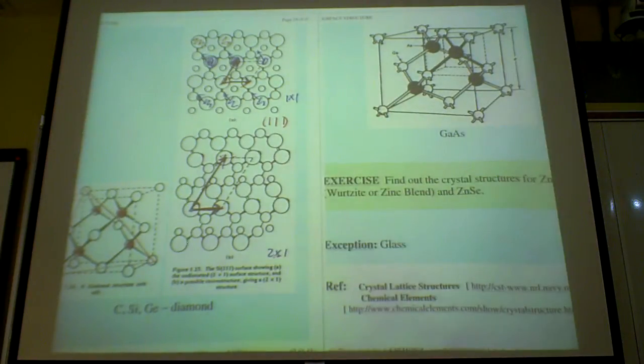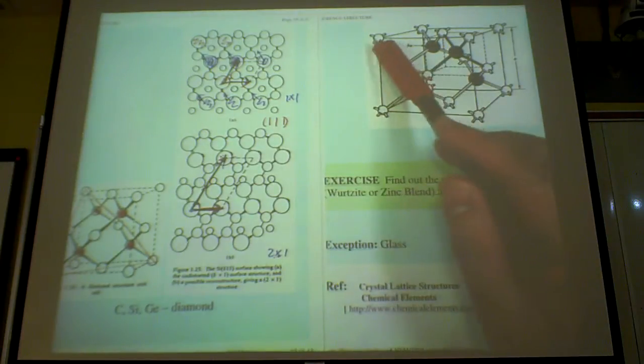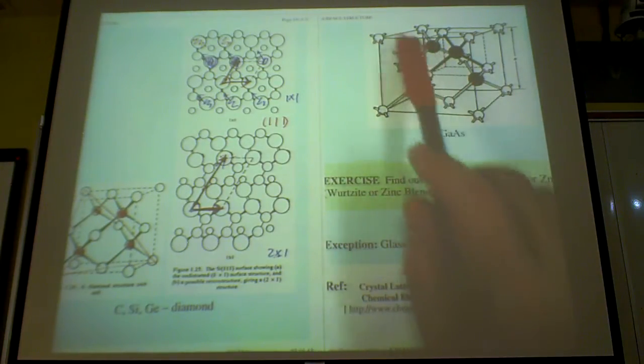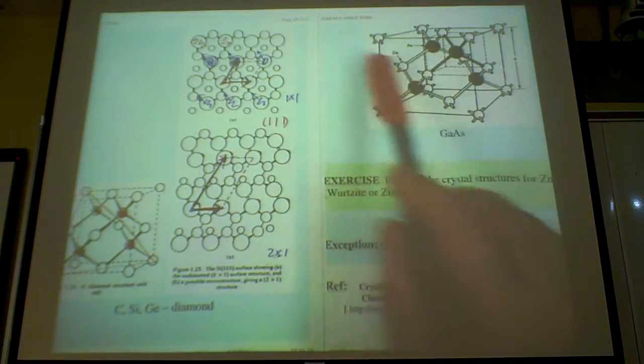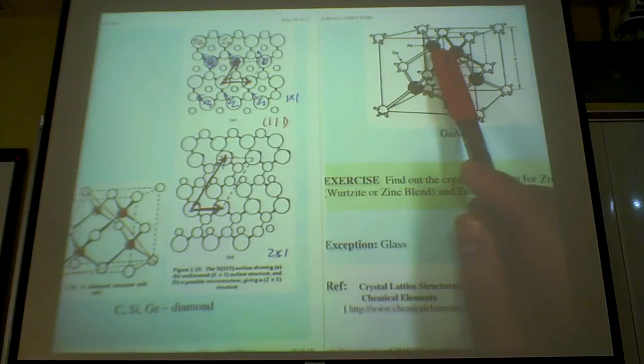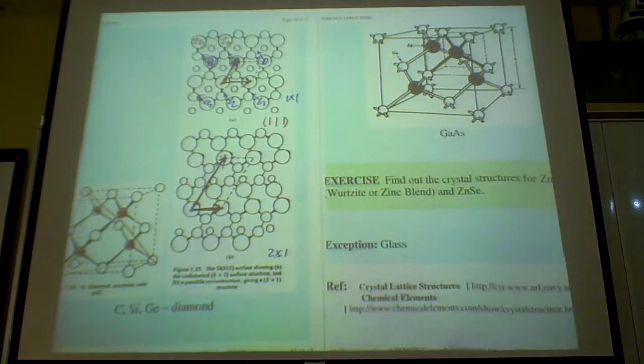And when you terminate your gallium arsenide, usually you can either terminate with the gallium cap or arsenic cap. So you can have a choice. You can either expose the gallium plane, and what normally happens is that you expose the arsenic plane in most of your reactions.